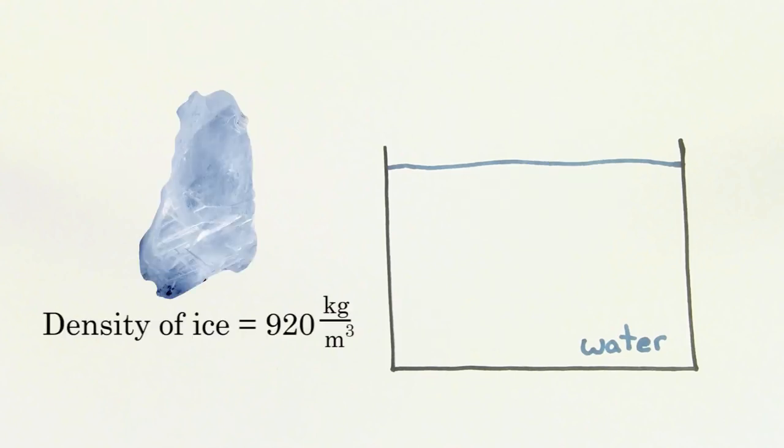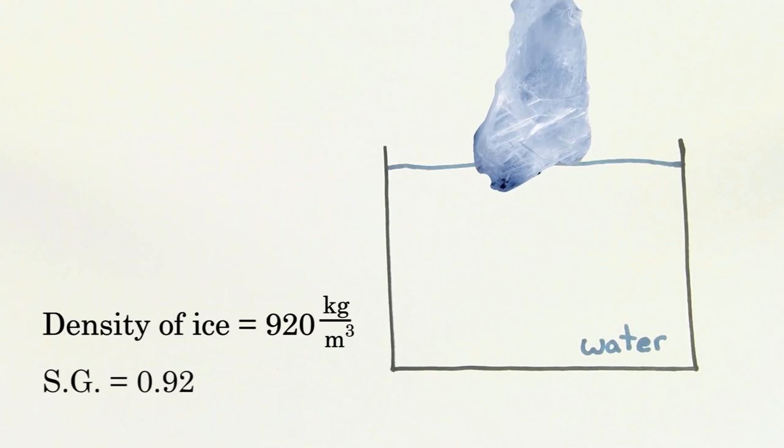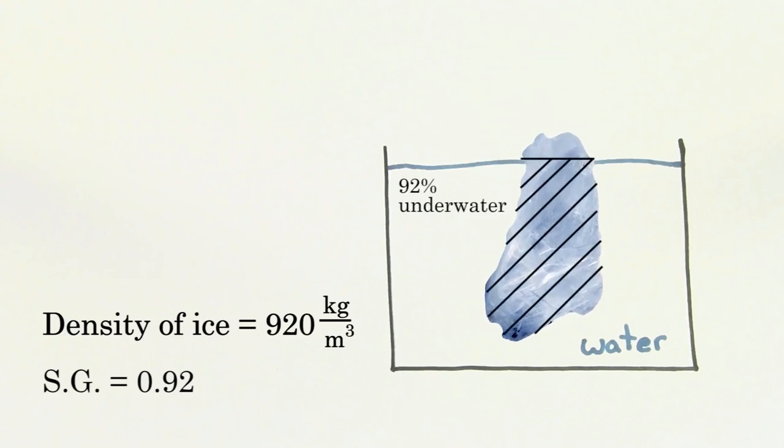Ice has a density of about 920 kilograms per meter cubed. That means ice has a specific gravity of 0.92, and that's why 92% of an iceberg's volume is actually underneath the water.